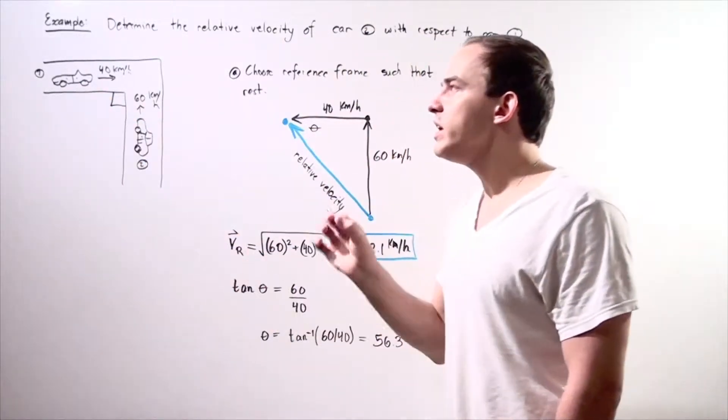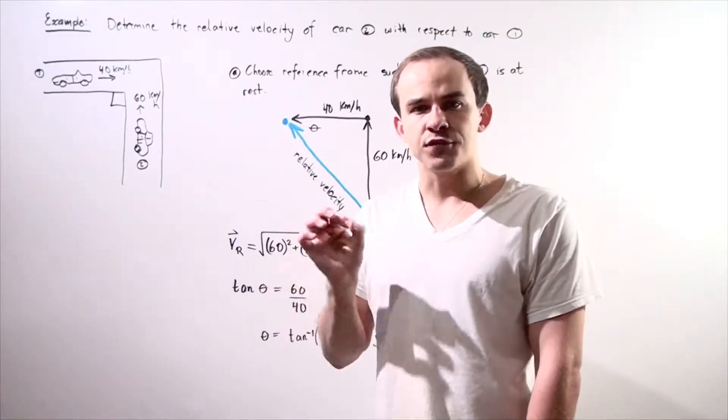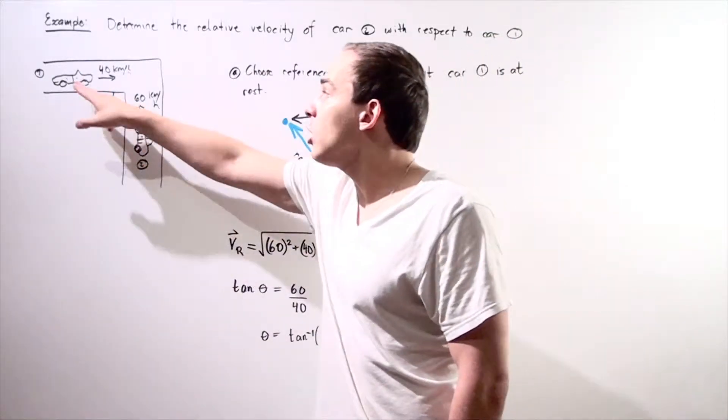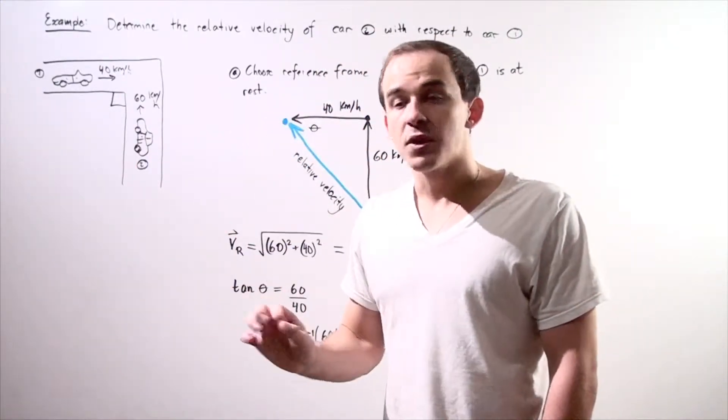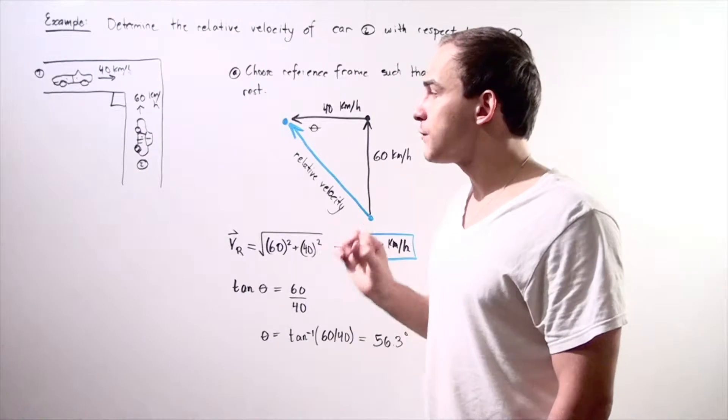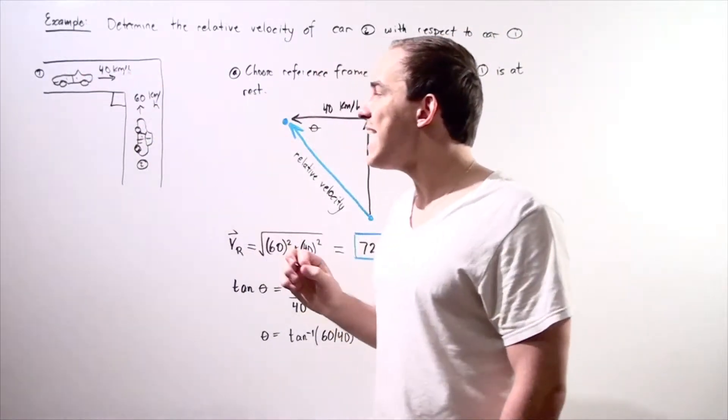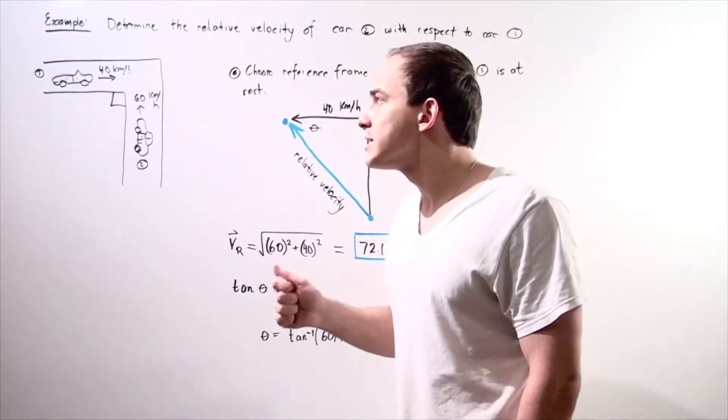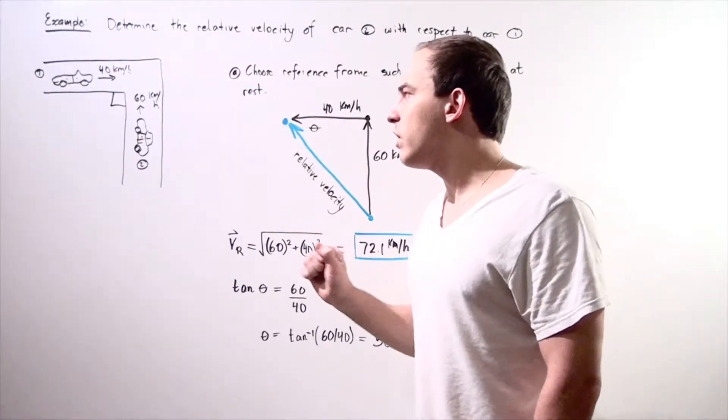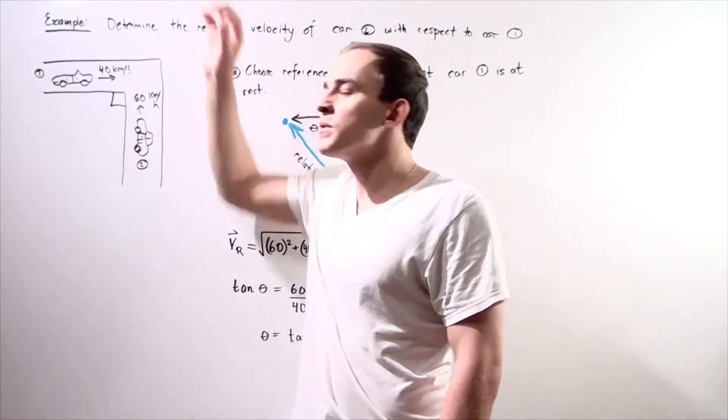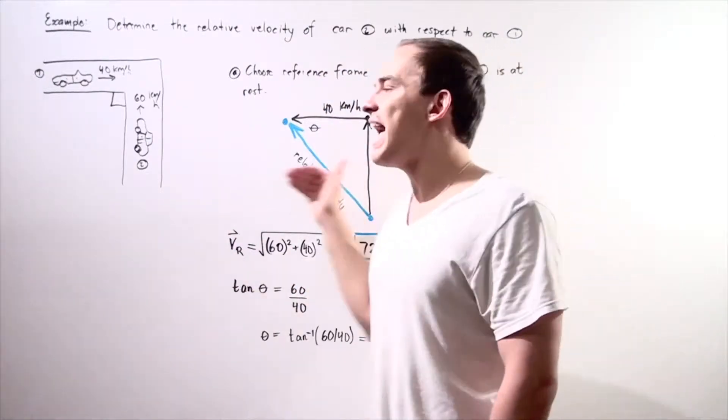In other words we want to choose a reference frame such that car one is stationary while car two is the car that's moving. So if we choose the reference frame in which car one is stationary that means we're making believe that this car is not only moving along the y-axis but it's also moving along the x-axis with the same exact magnitude of car one but different direction.